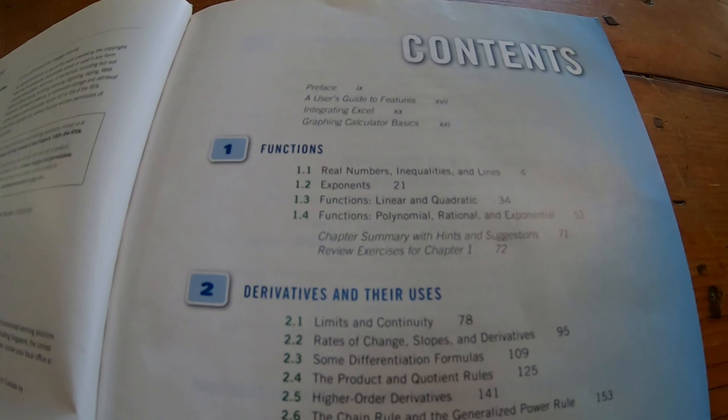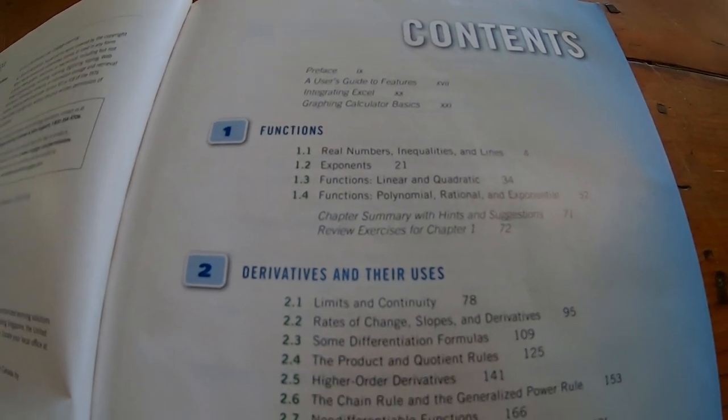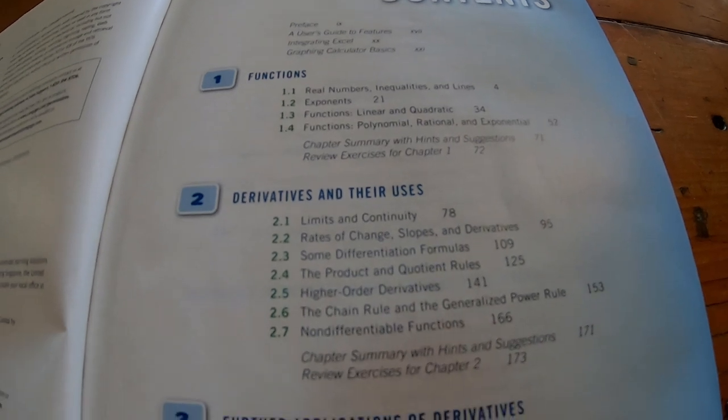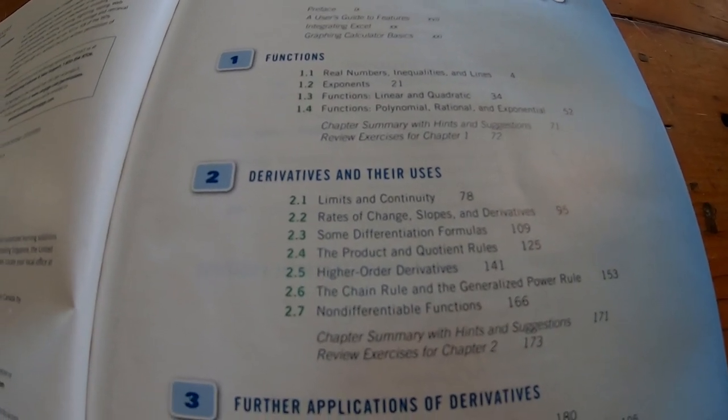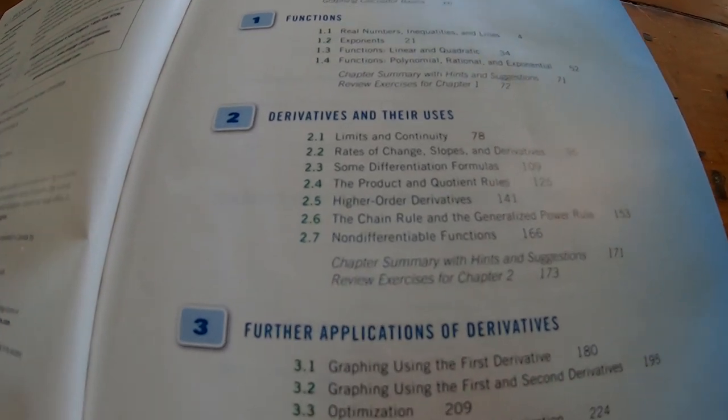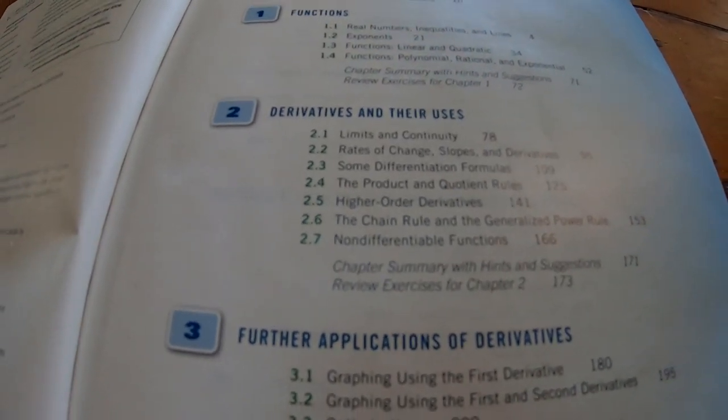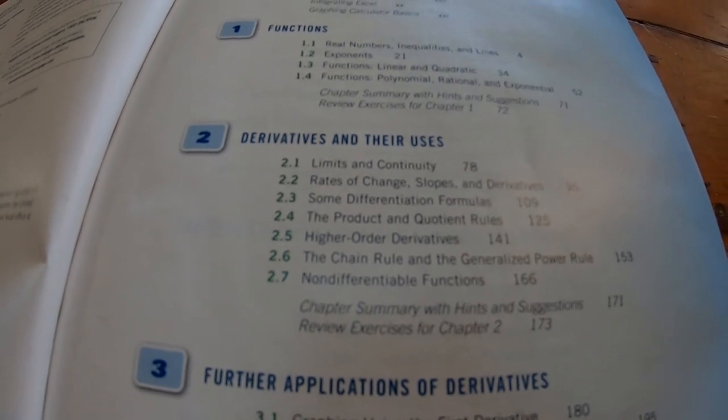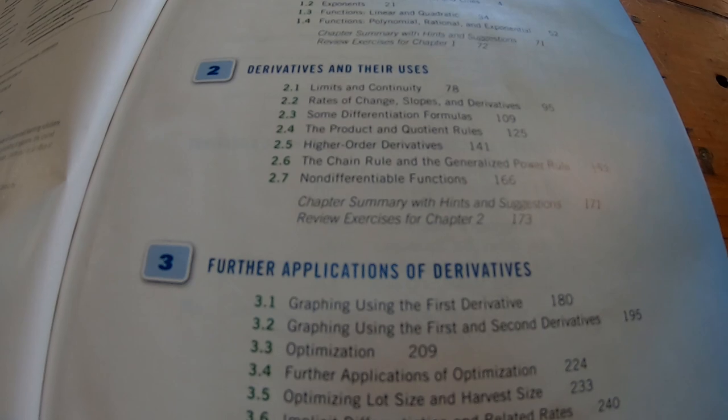This is the table of contents. It starts off with functions, then it goes on to derivatives, talks about all of the standard rules that you would learn in a regular calculus course, like the product rule, the quotient rule, the chain rule. It talks about non-differentiable functions, gives some really good examples there intuitively of what it means for a function to not be differentiable. Then it gives you some applications.